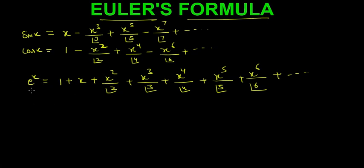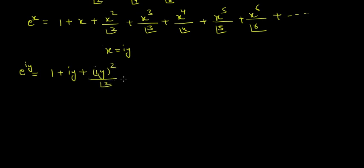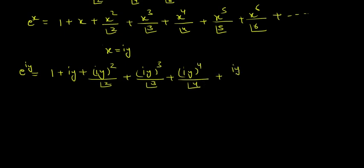Now we just have to change x as iota y, then solve, and we will simply get Euler's formula. Putting x equal to iota y: e raised to power iota y is equal to 1 plus iota y plus (iota y) squared by 2 factorial plus (iota y) cubed by 3 factorial plus (iota y) to the power 4 by 4 factorial plus (iota y) to the power 5 by 5 factorial plus (iota y) to the power 6 by 6 factorial and so on.